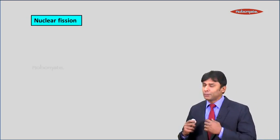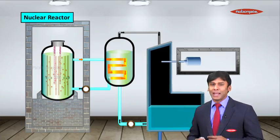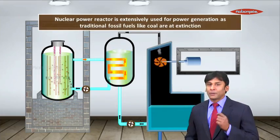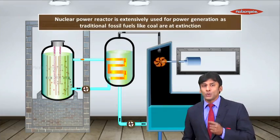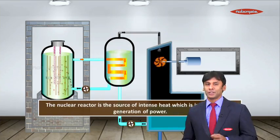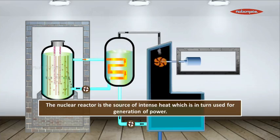Now let's discuss nuclear fission. When we discuss nuclear fission, here we have this nuclear reactor. Nuclear power reactor is extensively used for power generation as traditional fossil fuels like coal are at extinction. The nuclear reactor is a source of intense heat which is in turn used for generation of power.